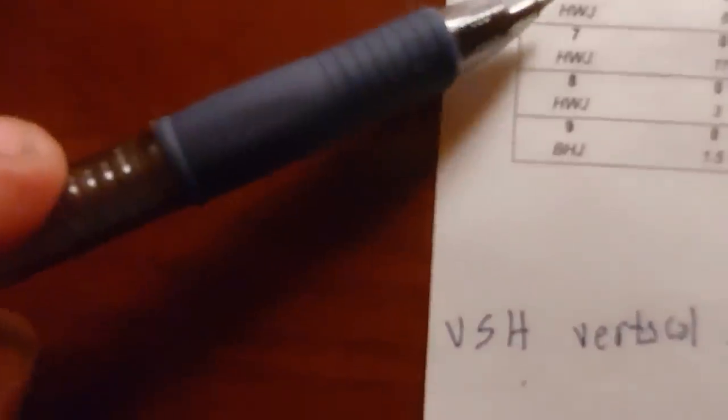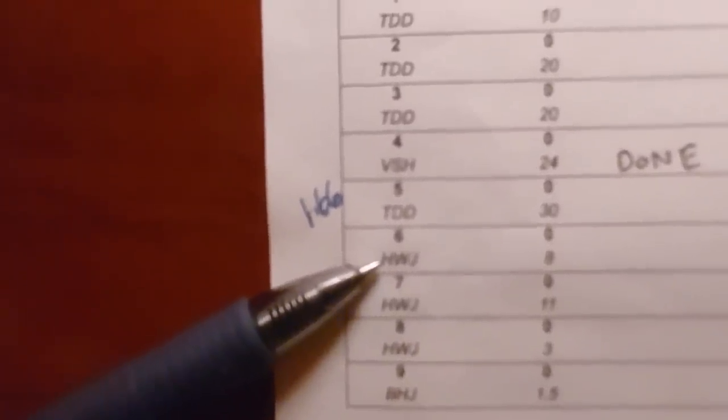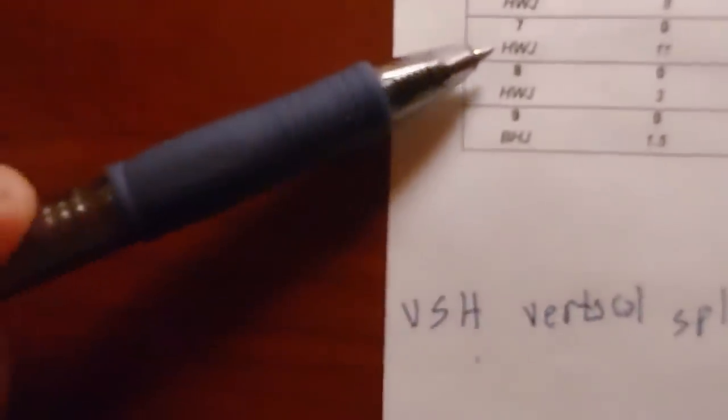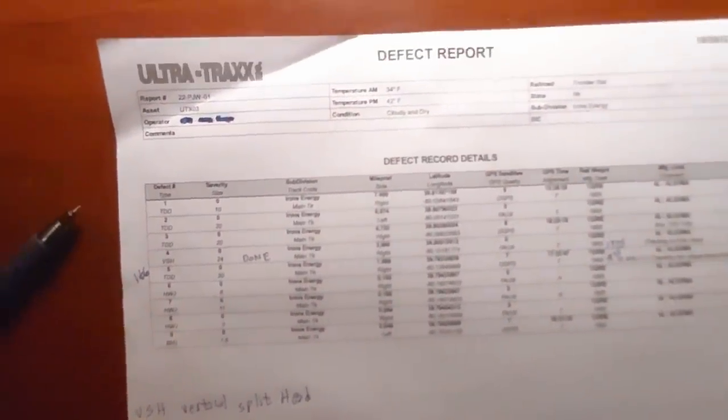Looking at the other defects on the report: the VSH stands for vertical split head. The HWJ is a head and web separation — I'll show you a picture of that. Further down there's another HWJ, another HWJ, and the BH is a bolt hole break in the joint area. There you have it — an ultrasonic testing report.